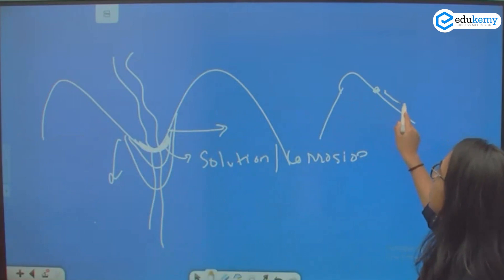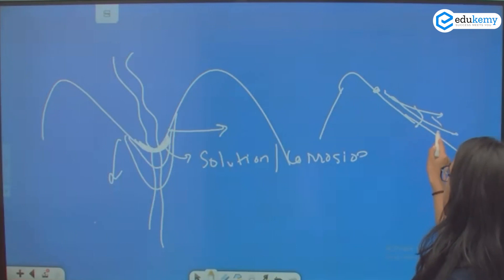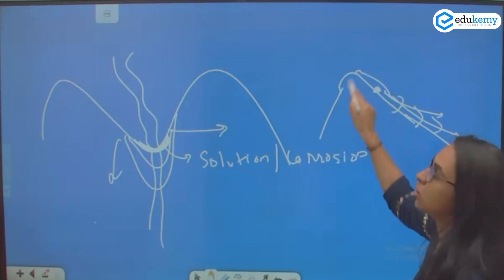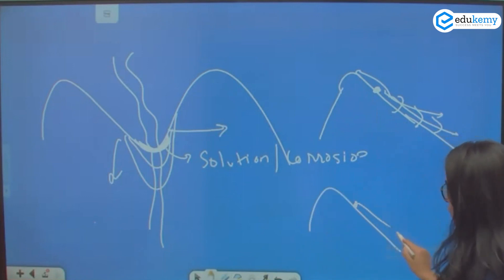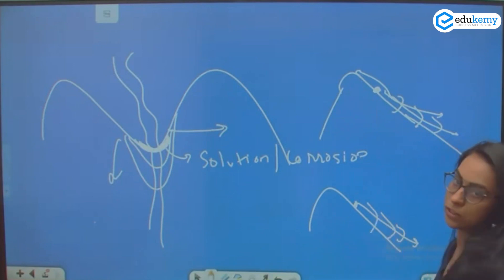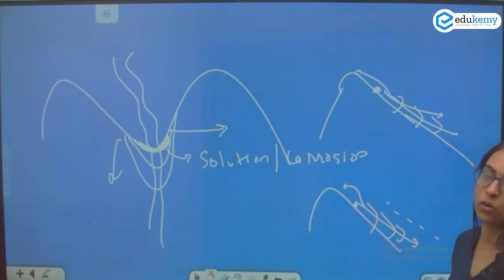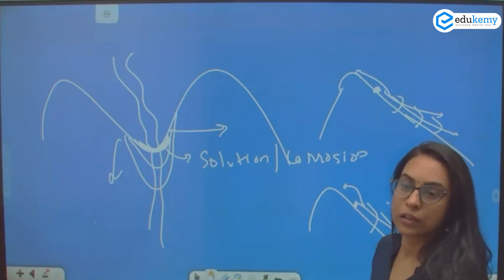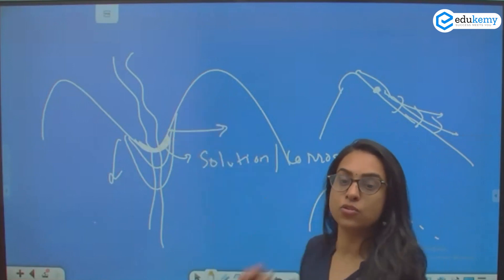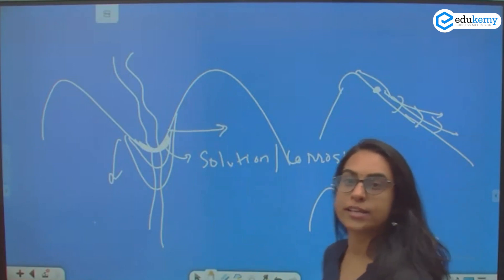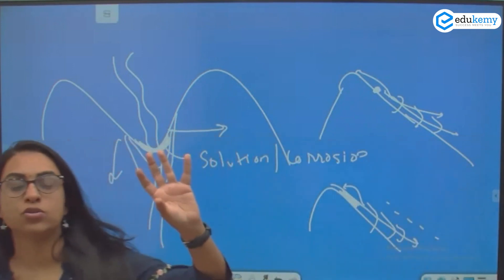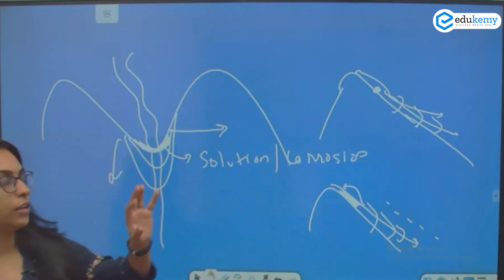Now imagine this is a river and this is its origin — where the river starts. The river is flowing this way. Can the river also erode the part above the origin? Yes — that is called headward erosion. The river erodes the upper part as well. So we have headward erosion, vertical erosion, and lateral erosion.